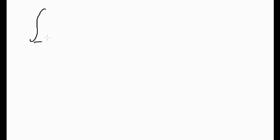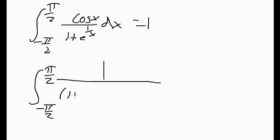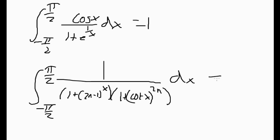Onto our challenge problems — we have two for this video. The easier one: ∫_{−π/2}^{π/2} cos x / (1 + e^{1/x}) dx = 1. The harder one: ∫_{−π/2}^{π/2} 1 / [(1 + (2n−1)^x)(1 + cot^{2n} x)] dx = π/4, where n is any integer.